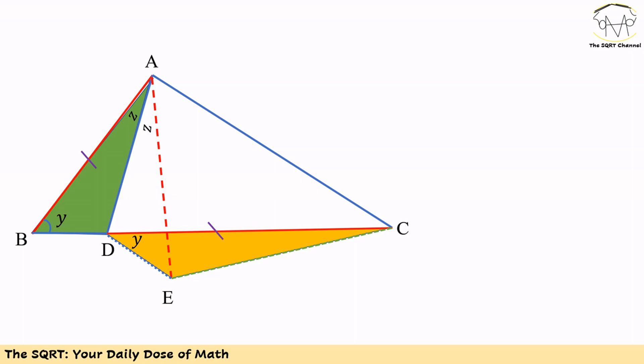Now let's connect C to E. We have two new triangles — one green and one orange. In these triangles, CD equals AB, BD equals DE, and both have equal angles Y. So these two triangles are also similar. Since they are similar, CE equals AD, and the angle at C in the orange triangle equals Z in the green triangle.